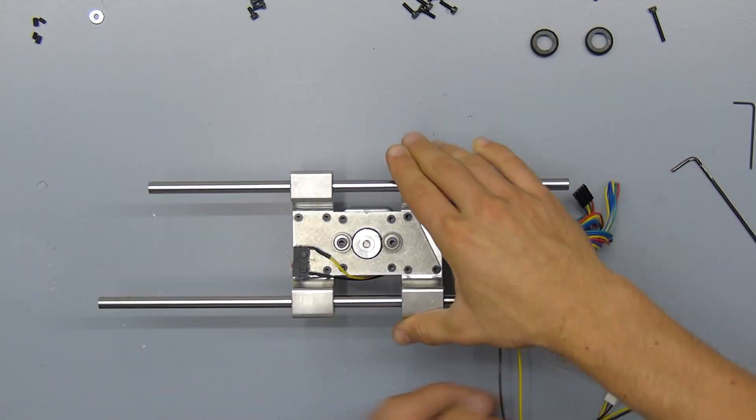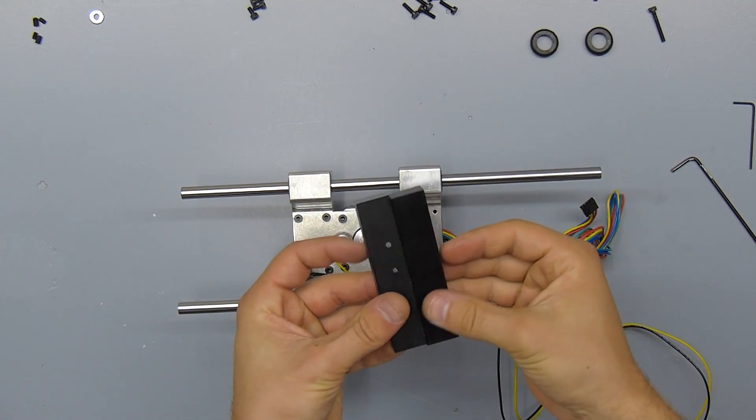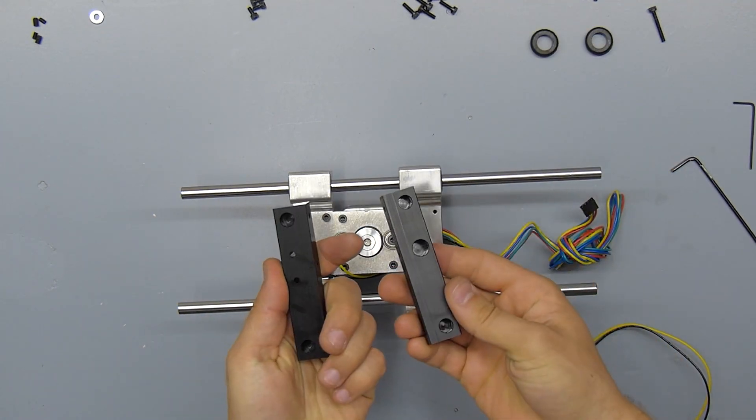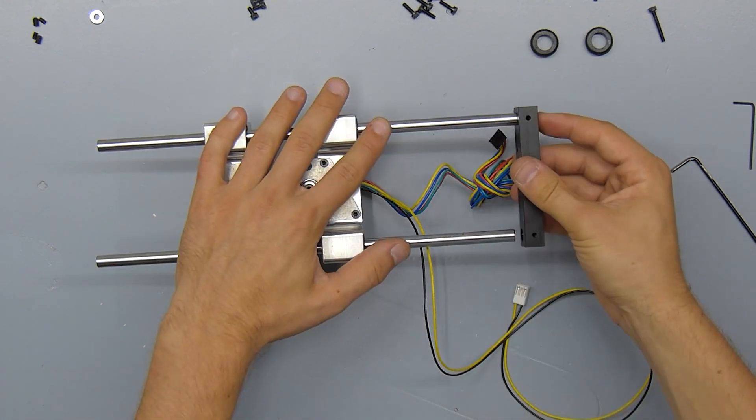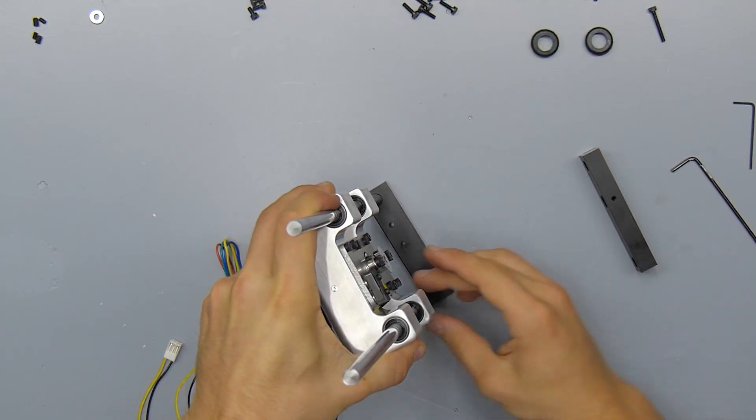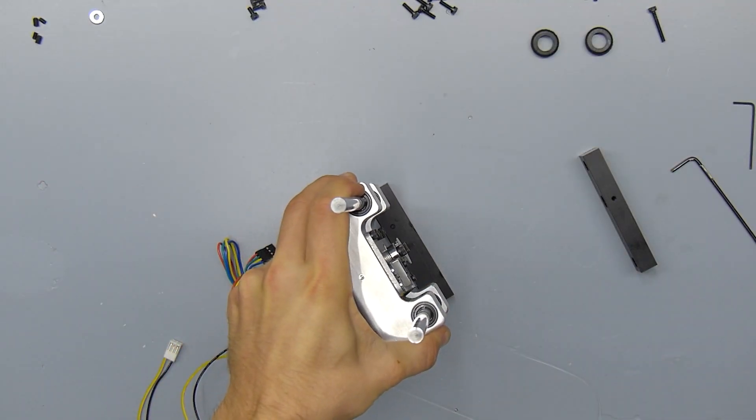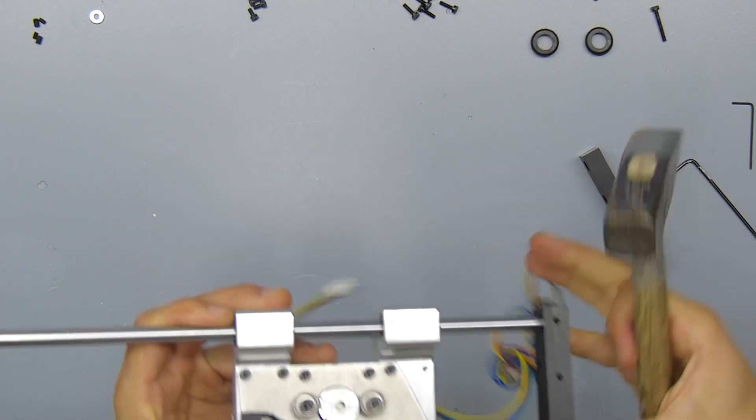Next we'll install the end blocks for the rails. Now, each of these can only be oriented in one specific way. So we're going to start out with the block that has the two small holes, install it on the opposite side of the endstop and orient the thicker part away from the motor. You might need to slightly convince these into place with a hammer.